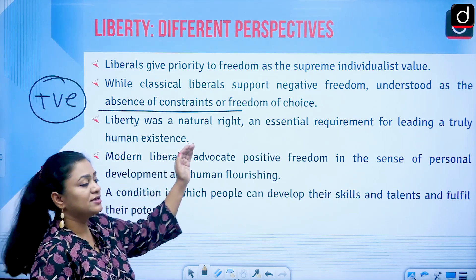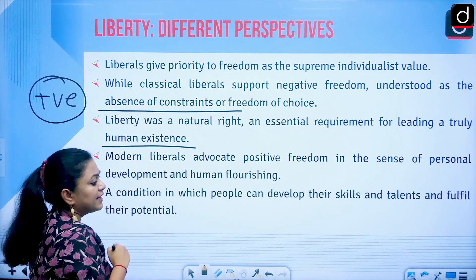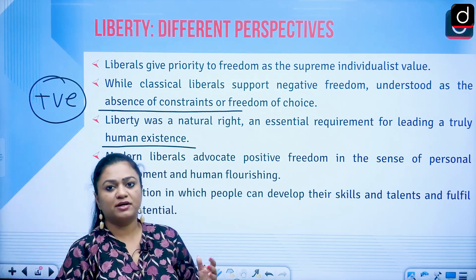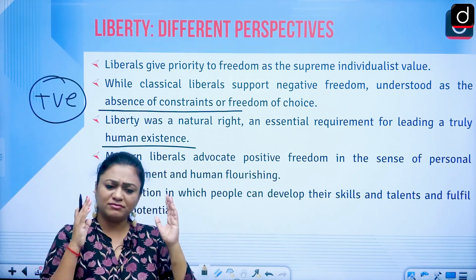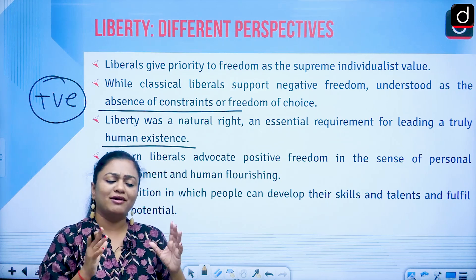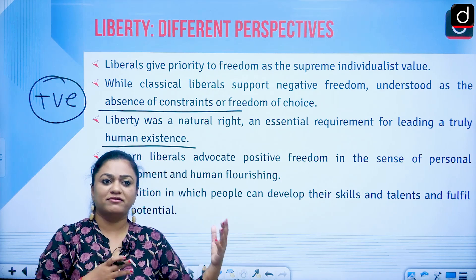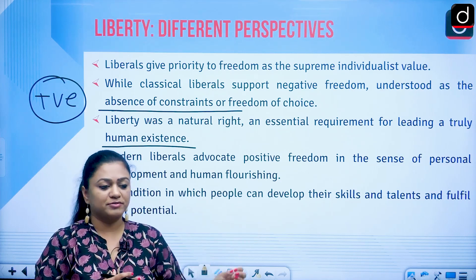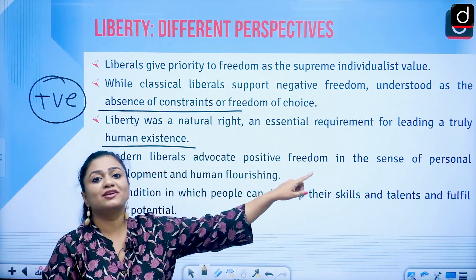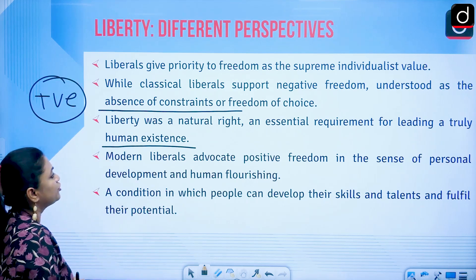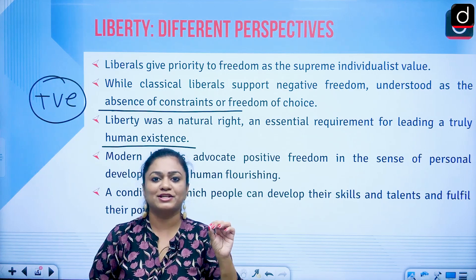Liberty was considered a natural right and an essential requirement for leading a truly human existence. When you read Thomas Hobbes, you understand that liberty acts as a natural right — from the time of your birth, every individual is endowed with this natural right. In order to live a good life you need liberty.